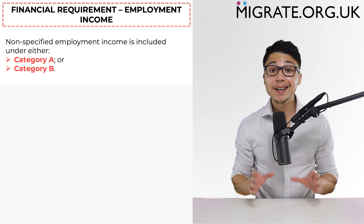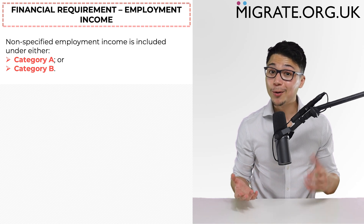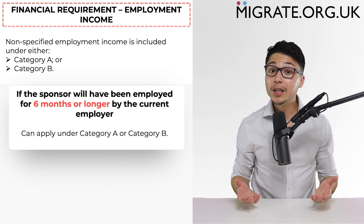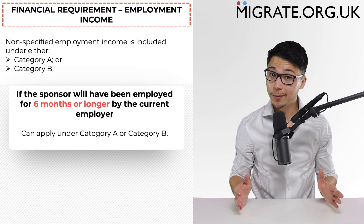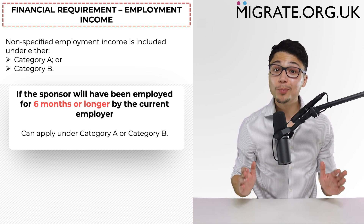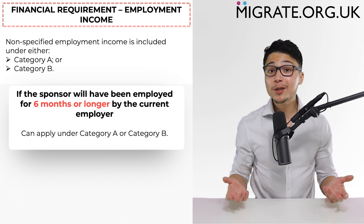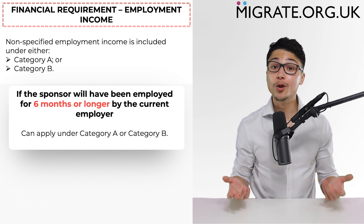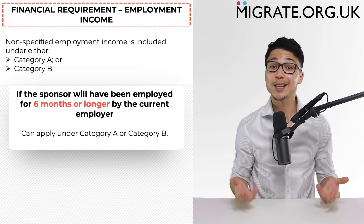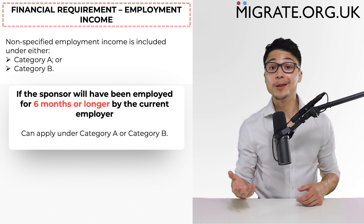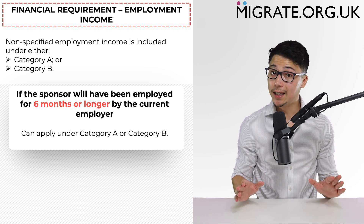This is the case even though the online application form does not reference either category A or category B. If the sponsor will have been employed for six months or longer by the current employer, they can apply under category A or B. Category A is the more straightforward approach. So if the sponsor will have been employed for six months or more when the online application is submitted, first consider category A. If the category A calculation is met, feel free to ignore category B completely.